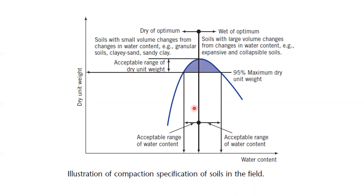From the maximum dry density and optimum water content point, the left-hand side is called 'dry of optimum' and the right-hand side is the 'wet side.' Granular soils — clay sand or sandy gravels — are compacted towards the dry of optimum, whereas expensive or collapsible soils can be compacted on the wet of optimum. We can maintain a density range of 95% to 100%, and this is the acceptable range with corresponding acceptable water content.